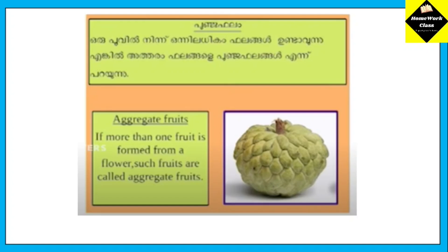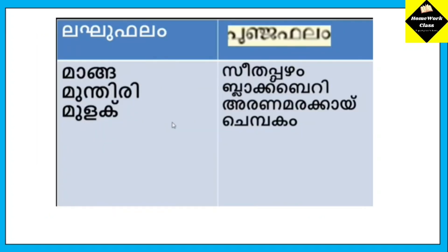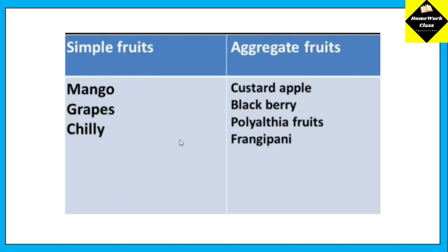If more than one fruit is formed from a flower, such fruits are called aggregate fruits. Simple fruits include mango, grapes, and chili. Aggregate fruits include custard apple, blackberry, polyalthia, and frangipani.